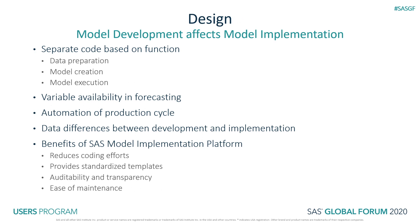Now that we've discussed some of the challenges that arise in model implementation, let's talk about how to address them, starting with design. Many of these challenges can and should be addressed in the design phases of both model development and model implementation. For example, data preparation, model creation, and model execution code should be separated in model development, because only data preparation code and model execution code will be utilized in the production cycle. If these pieces are intertwined, additional effort must be taken to separate them — effort that would be unnecessary if those pieces were separate in the first place.